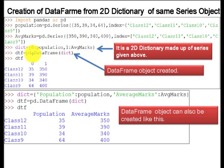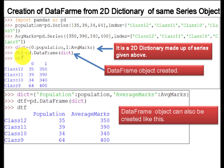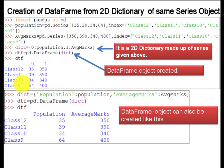How can you convert it into a DataFrame? Simply you will use a DataFrame object: dtf = pd.DataFrame and pass the dictionary object. This dictionary will be converted into the DataFrame. When you execute dtf, you will get the values. The column names are 0 and 1, and the index is class 12, class 11, class 10, and class 9. Population is 35 and average marks is 350 for class 12; class 11 has 39 and 390; class 10 has 34 and 340; class 9 has 64 and average value 400.